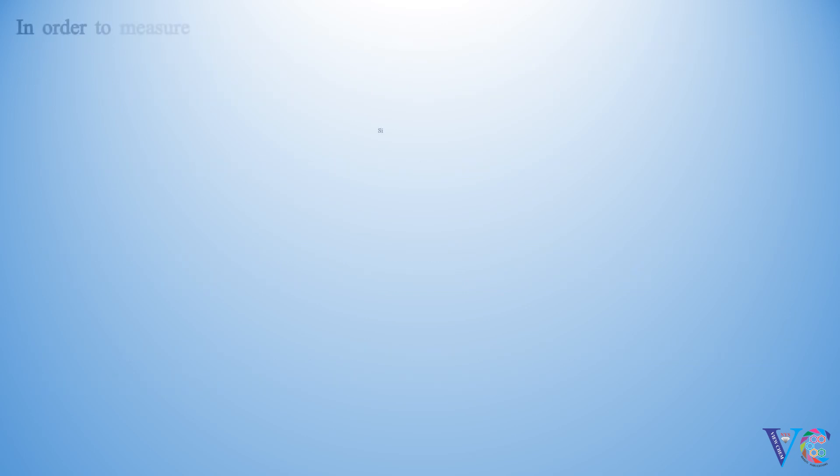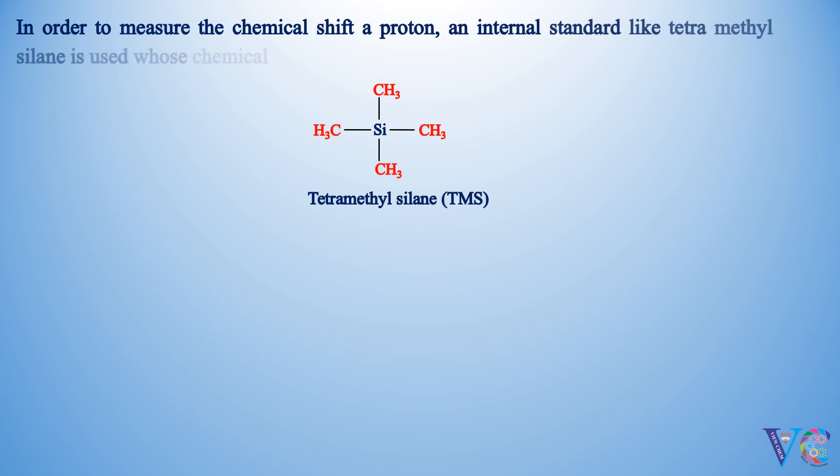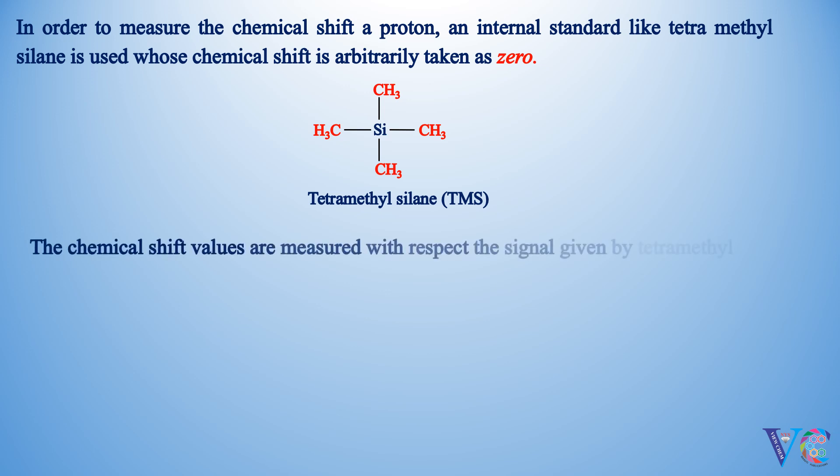In order to measure the chemical shift of a proton, an internal standard like tetramethylsilane is used, whose chemical shift is arbitrarily taken as zero. The chemical shift values are measured with respect to the signal given by tetramethylsilane.